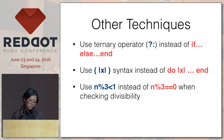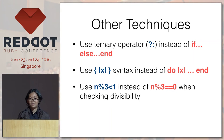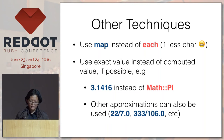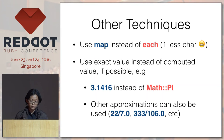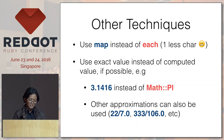There are some other techniques. You can use ternary operators instead of the usual if-else. Use single line block syntax instead of do-end. In checking divisibility, you can check if it's less than 1 instead of checking if it's equal to 0 — it saves one character. Similarly, using map instead of each uses one less character, and map does whatever each does. And if possible, you can use the exact value instead of a computed value, like 3.1416 instead of Math::PI. Other approximations can also be used but require some research.